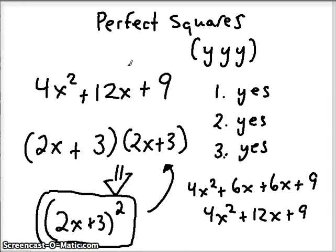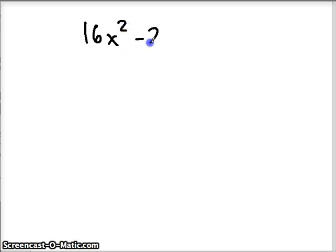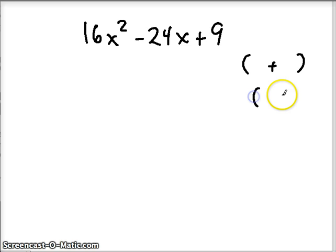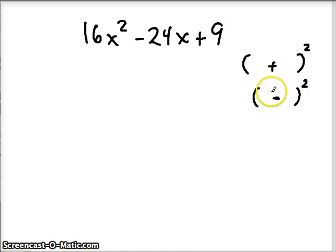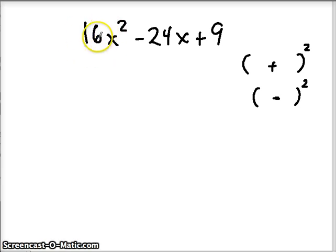Let's do one more perfect square and talk about one more important thing. When you're writing your parentheses, you're either putting a plus or a minus between the terms. If you square a positive, you get a positive for the last term. If you square a negative, you also get a positive. So this last term has to be positive in order to use this pattern. The first term also usually has to be positive — although if it were negative, we could always factor out a negative 1 first to get back to a usable form.